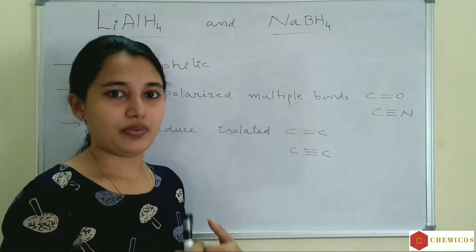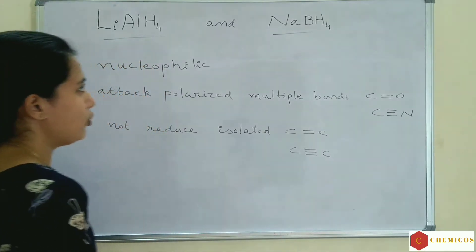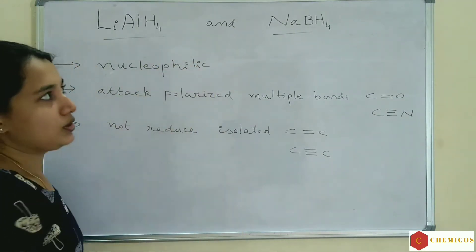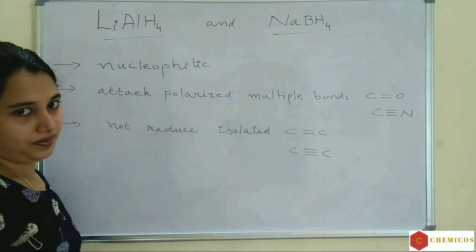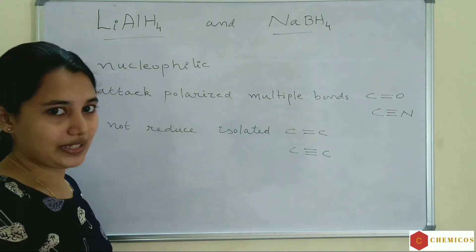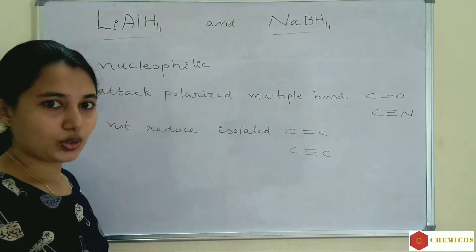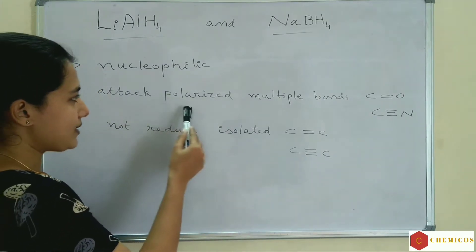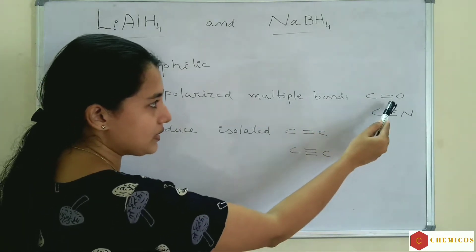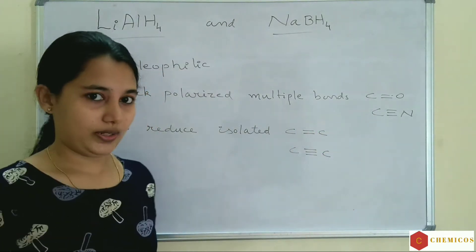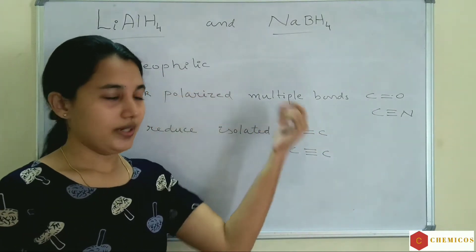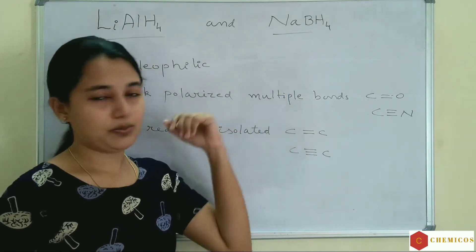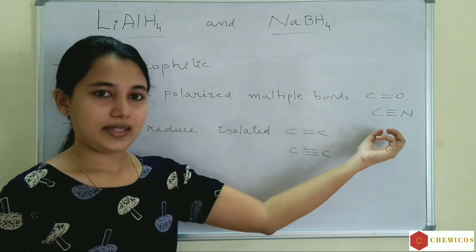Which type of compounds are reduced by these reagents? The main similarities are both are nucleophilic in nature. Nucleophile means nucleus-loving, positive-loving species, and they attack polarized multiple bonds — C=O and C≡N. Lithium aluminum hydride and sodium borohydride attack polarized multiple bonds: C=O and C=N.